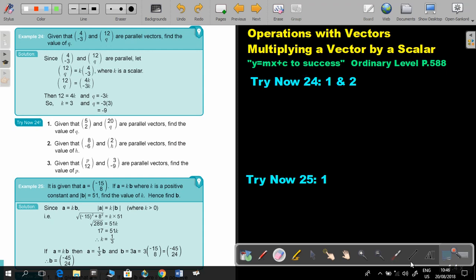Let's look at example 24. Given that this is the column vector and this is the column vector, and they are parallel vectors, find the value of Q. Now, if they are parallel, I can take out or say, for example, a scalar was multiplied with this one to get this one.